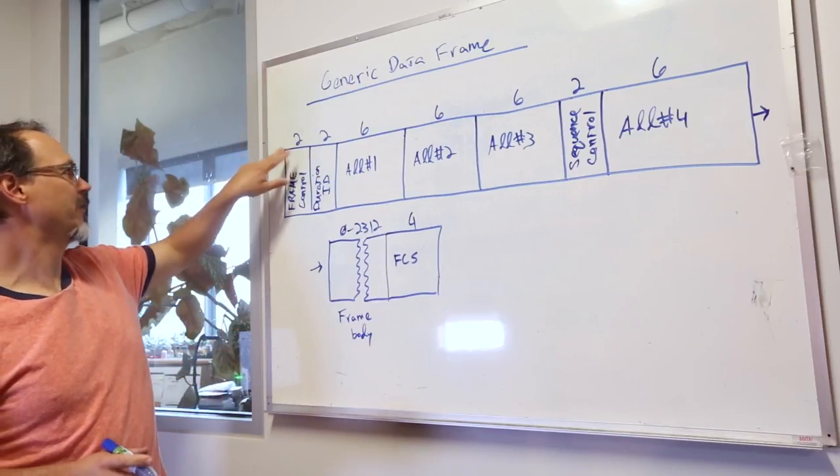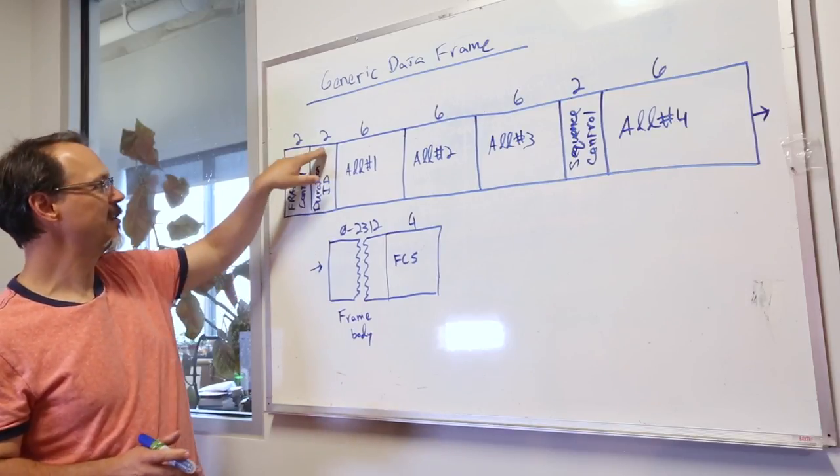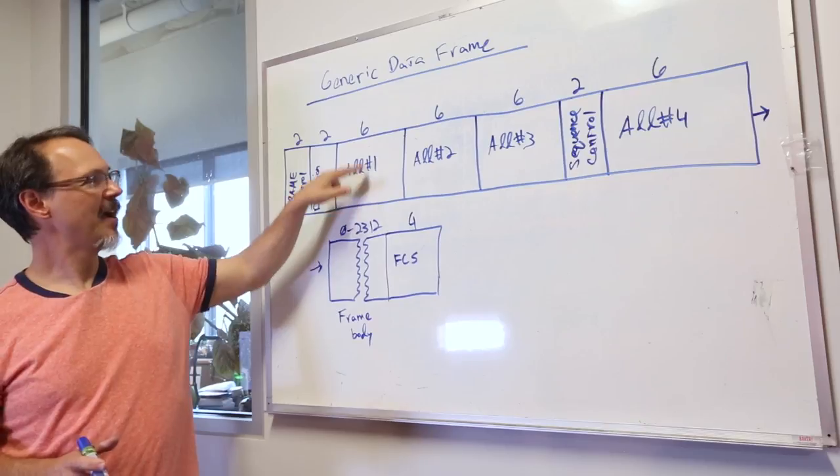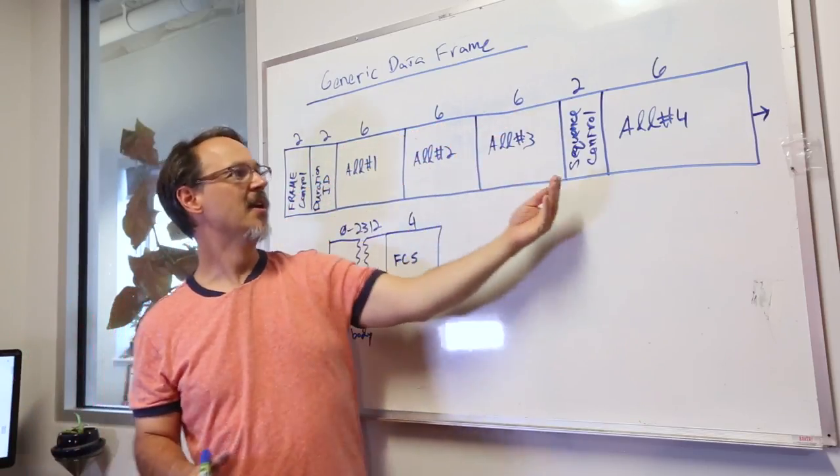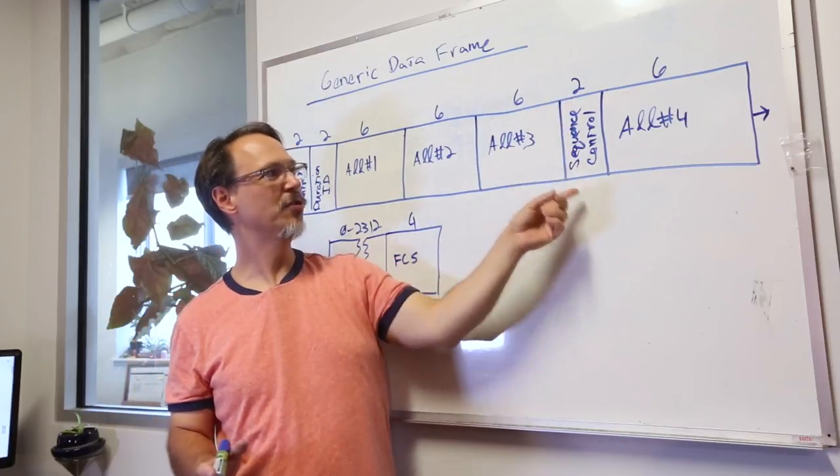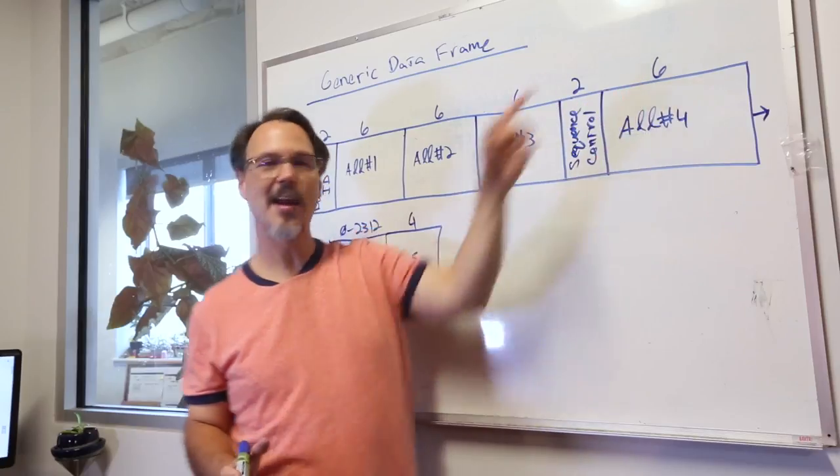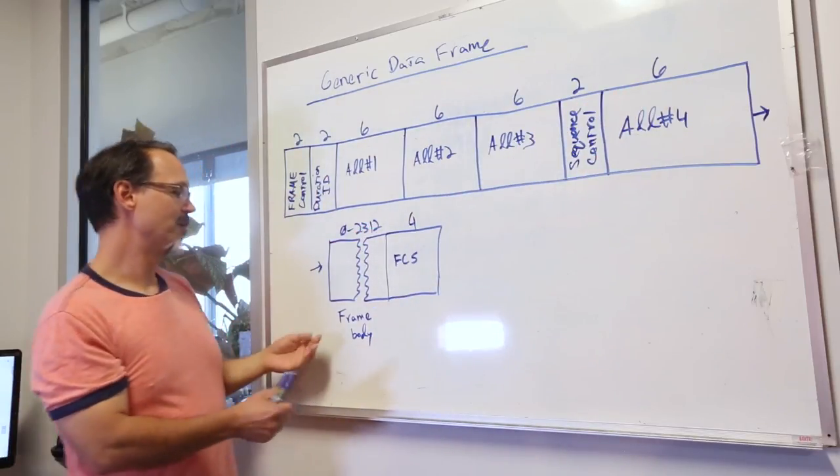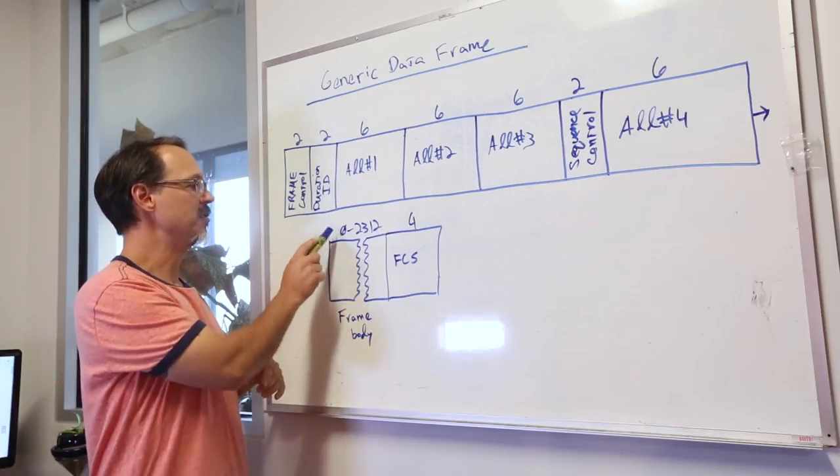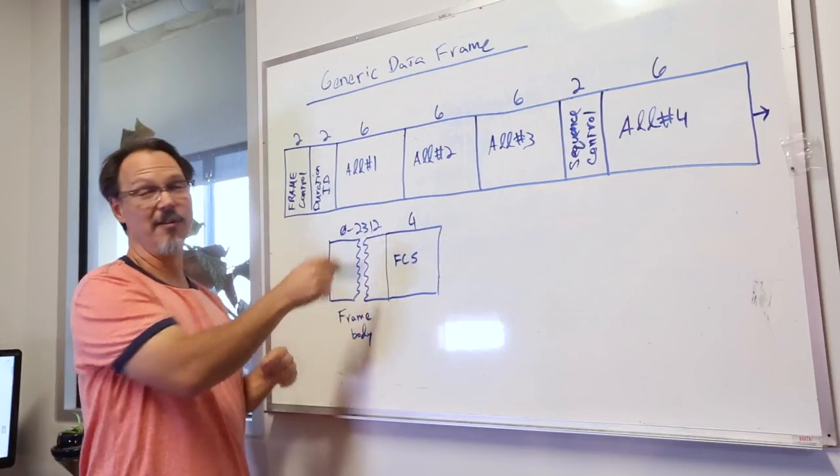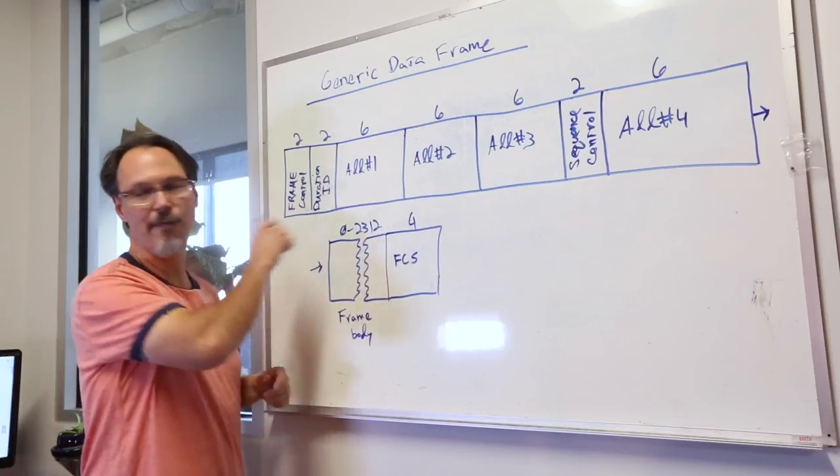The sections are thus. The first two bytes are a frame control section. Then there is a duration ID for two bytes. First address, six bytes. Second address, six bytes. A third address, six bytes. Then there is sequence control for two bytes. And then there is an optional fourth address at six bytes. After which comes the actual data itself, the frame body. And that can be anywhere from zero bytes to 2,312 bytes. And at the very end is a checksum that is four bytes.